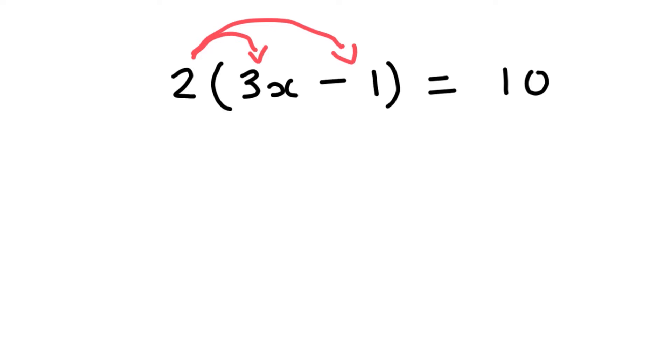So let's simplify this a little bit. 2 times 3x is 6x. 2 times minus 1, or negative 1, is minus 2. And on the right side, we just have 10.